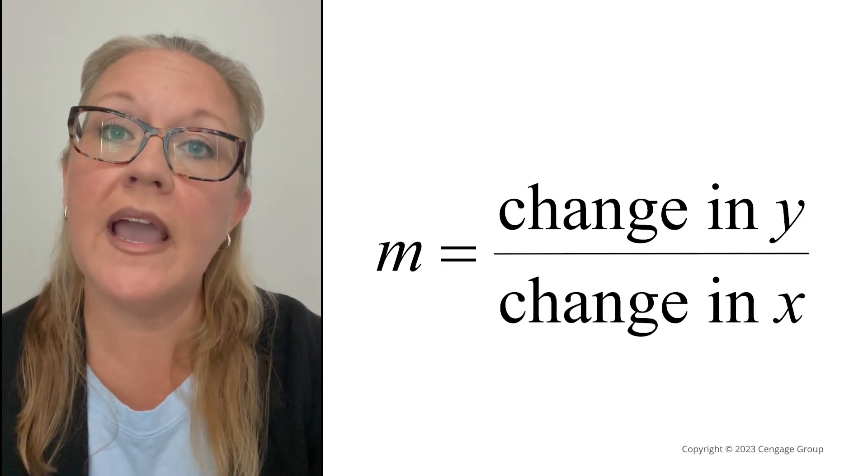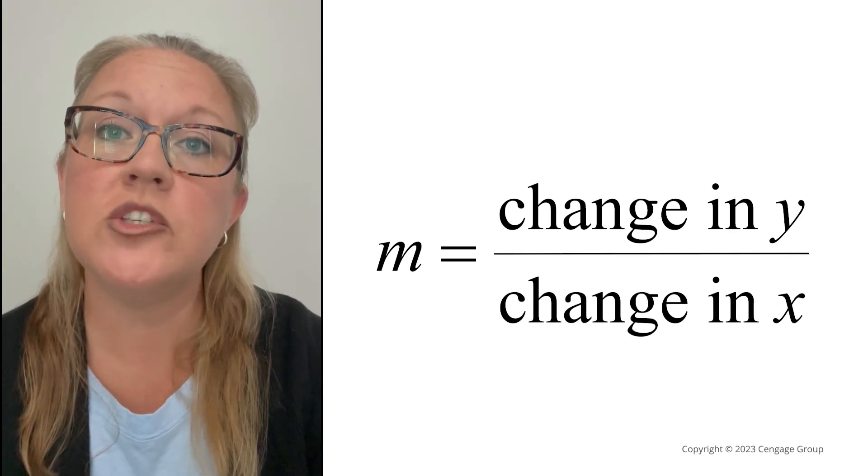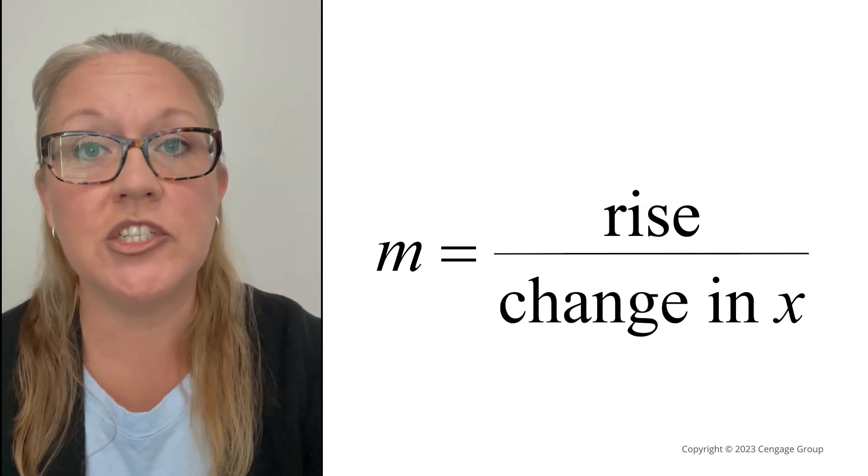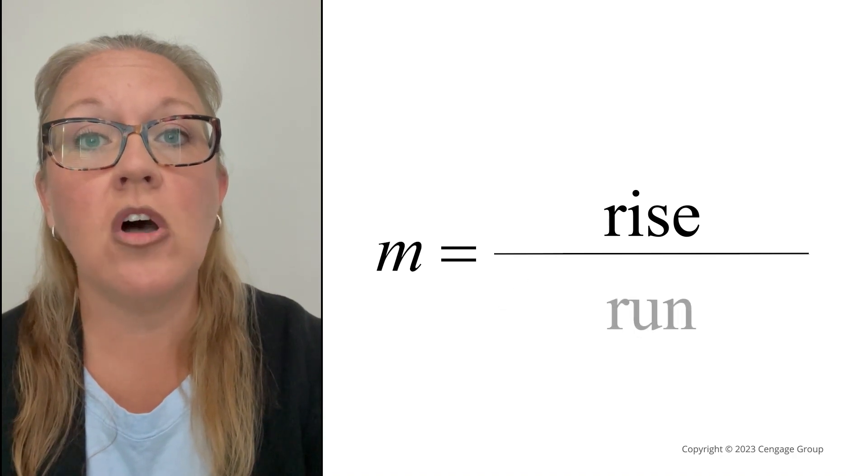Now, the change in y is a vertical change from one point to another, called the rise. The change in x is a horizontal change from one point to another, called the run.